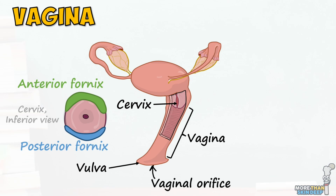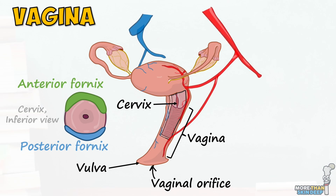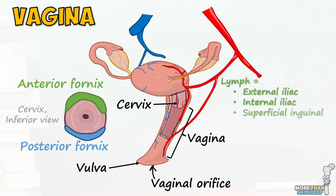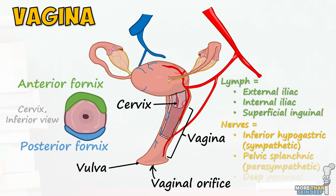At the lower end is the vaginal orifice, which opens into the vaginal vestibule. Blood supply and drainage of the vagina is via branches of the uterine arteries or veins. Lymph drains into the external and internal iliac and superficial inguinal nodes. Parasympathetic and sympathetic innervation comes from the same nerves as the uterus. However, the vagina additionally receives somatic sensory innervation from the deep perineal nerve, which is a branch of the pudendal.